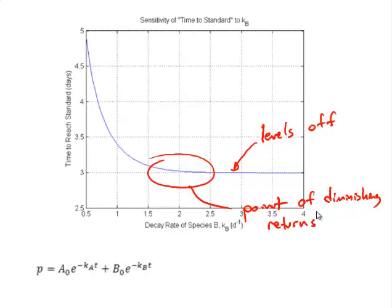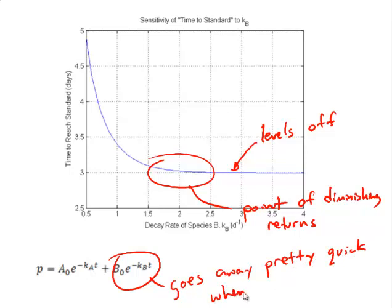Basically the species B is decaying off so fast that it's not a limiting factor on when we achieve that standard. We see that this exponential term goes away, pretty much goes to zero pretty quick when KB is greater than about 2, and everything is driven by the first term in the model. So making conclusions about the model is kind of beyond the scope, although it's nice to ground what we are doing in some real analysis.